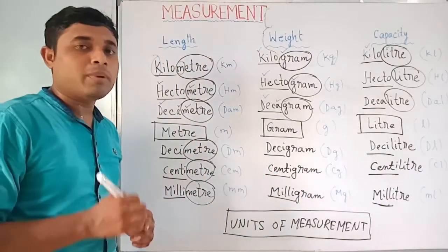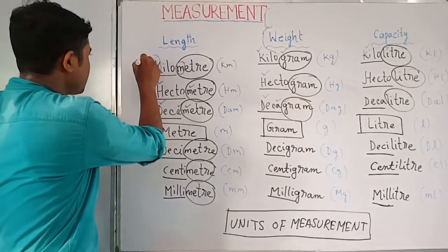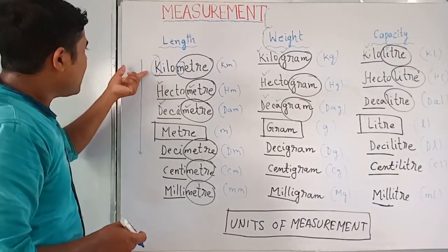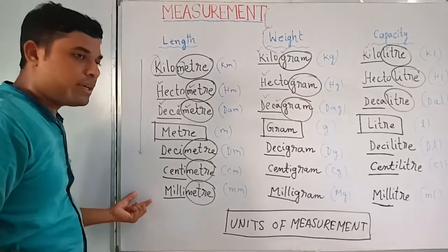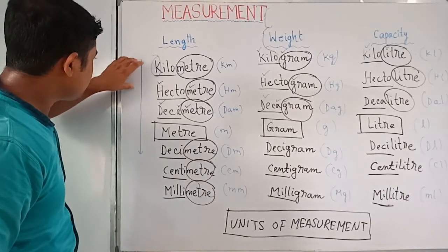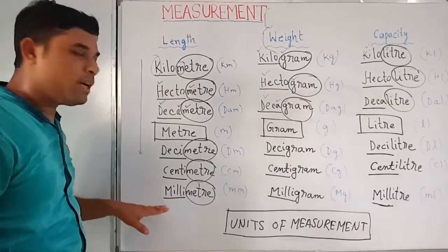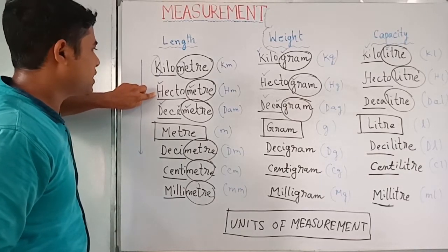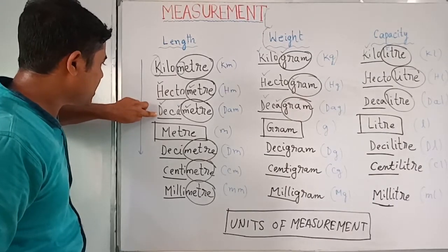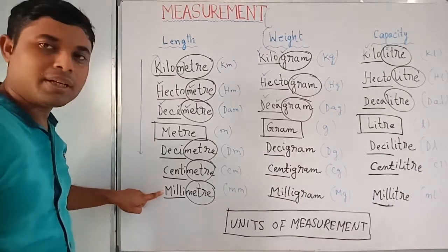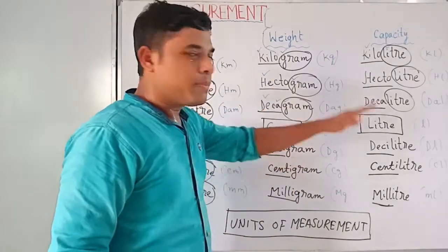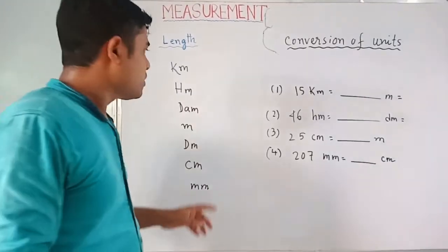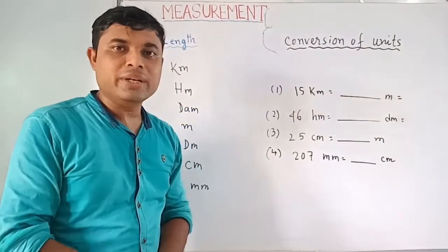When you move from top to bottom in the unit chart, you are moving from a higher unit to a lower unit. Kilometer is higher than hectometer; hectometer is higher than decameter; similarly centimeter is higher than millimeter. Now we will learn conversion of units.